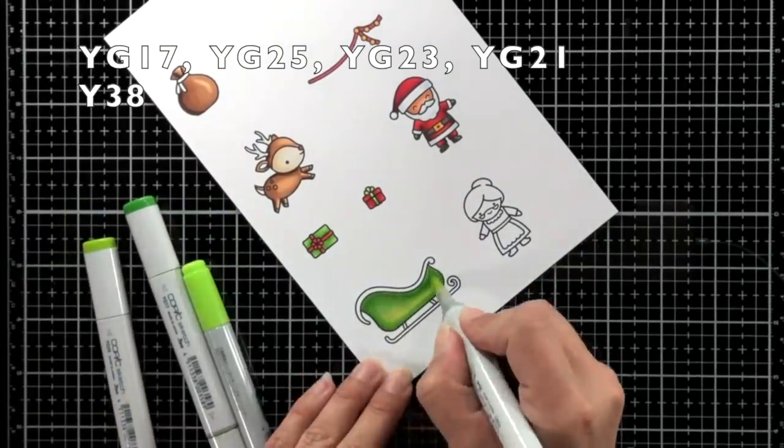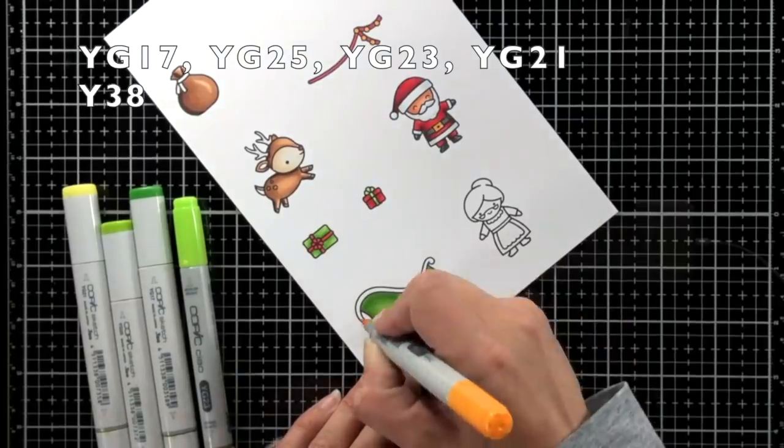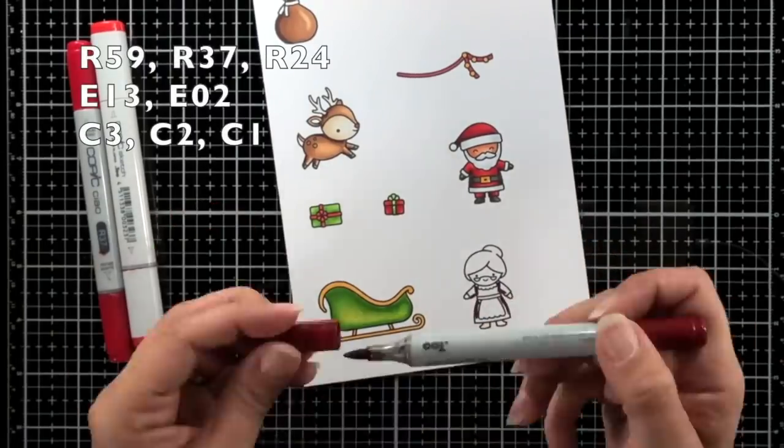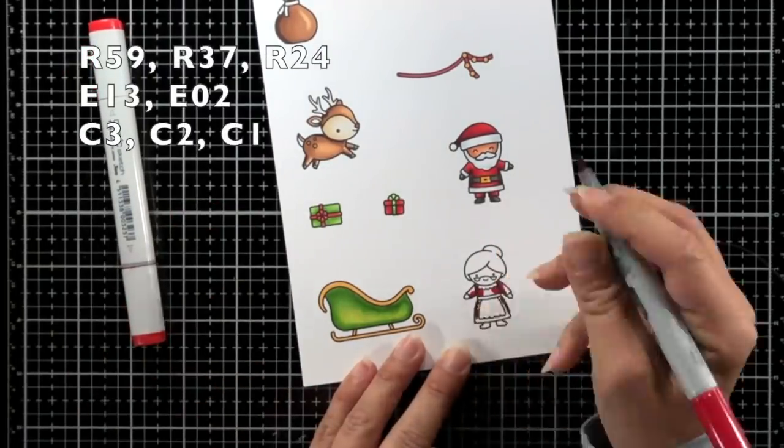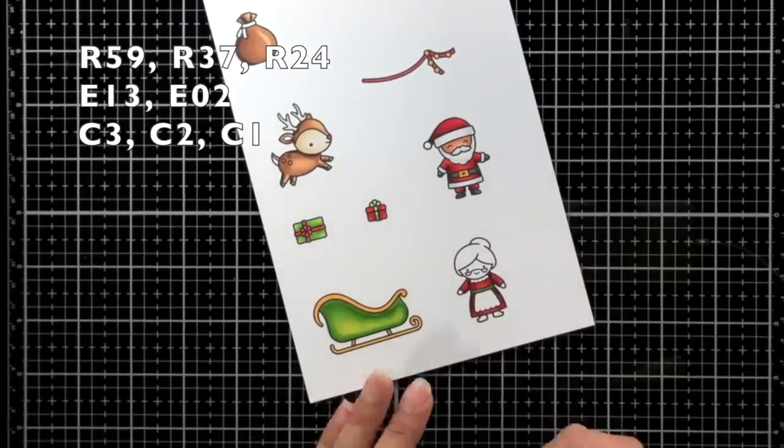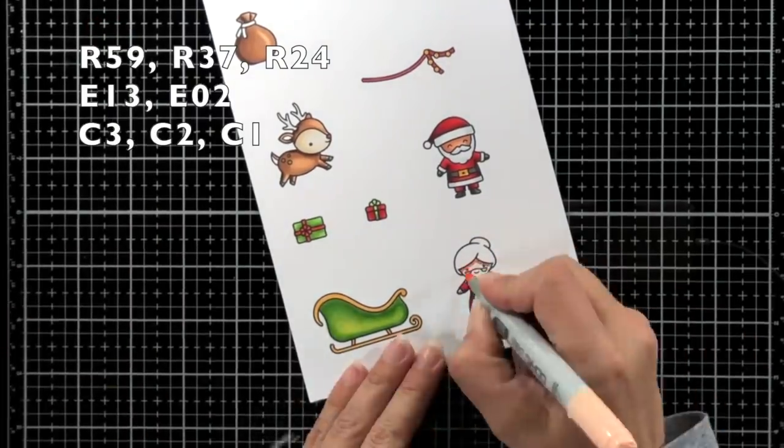Now don't mind that the Santa is colored. I forgot I didn't need him on here, so I kind of skipped over that part because I will be coloring the Santa later in the video. Now for the reds I'm using R59, R37, and R24.